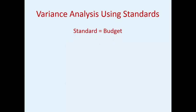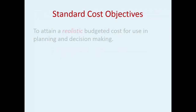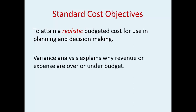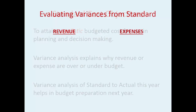So what is standard? Think budget — we're looking at a fixed budget and then a variable budget. You want to compare budgeted to actual to see how well you did: budgeted to actual revenue, budgeted to actual expenses. For standard cost objectives, you want to attain a realistic budgeted cost for use in planning and decision making. Variance analysis will explain why revenue or expenses are over or under budget, and the variance analysis of standard to actual this year helps in your budget process next year.